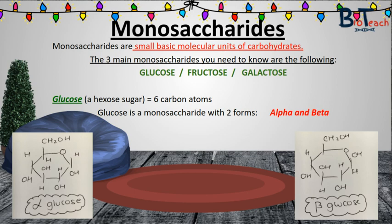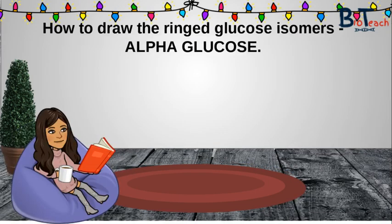Glucose itself is an isomer. Isomers are compounds with the same chemical formula but different arrangement of atoms. The different arrangement means that each isomer has different properties — for example, alpha or beta glucose. The diagrams on the bottom of this slide show you alpha glucose on the left-hand side and beta glucose on the right-hand side. For your exam, you need to be able to draw both alpha and beta forms of glucose.